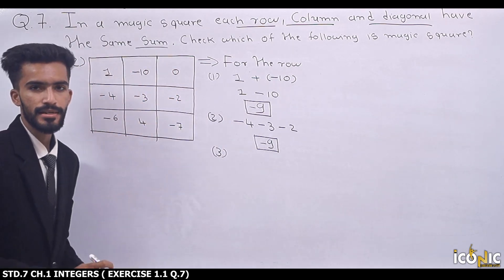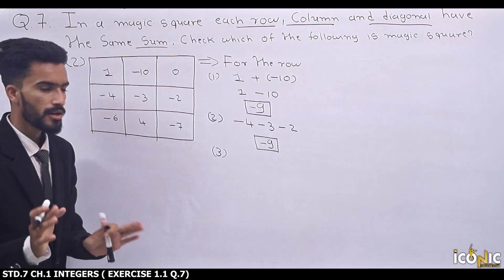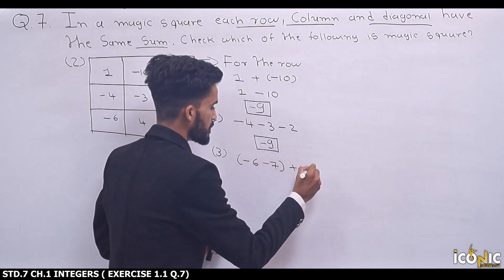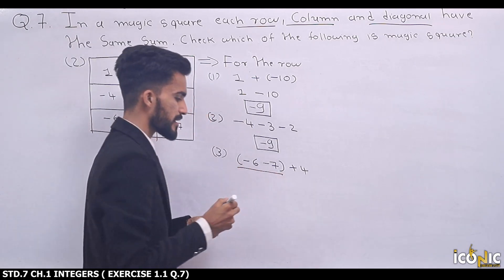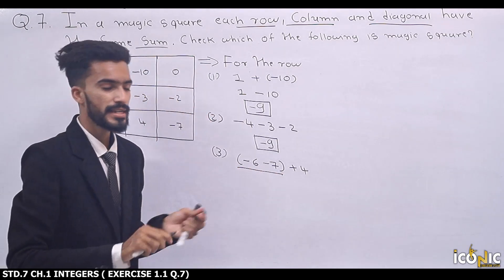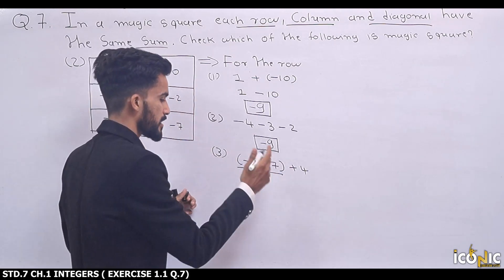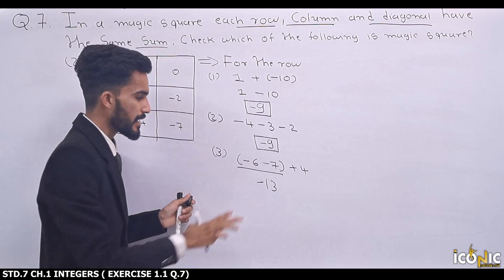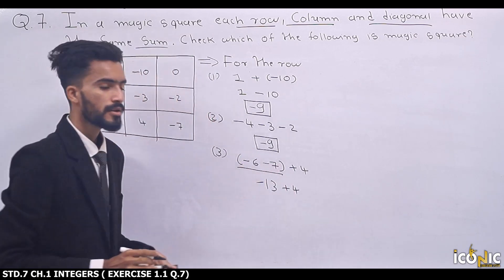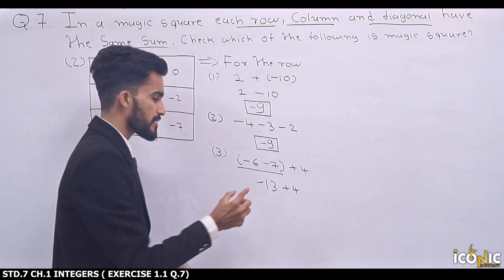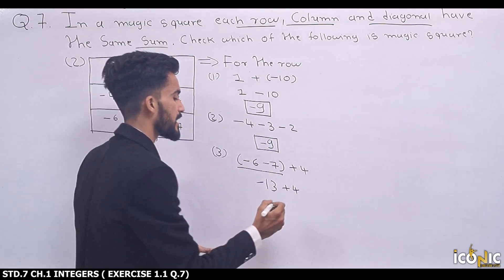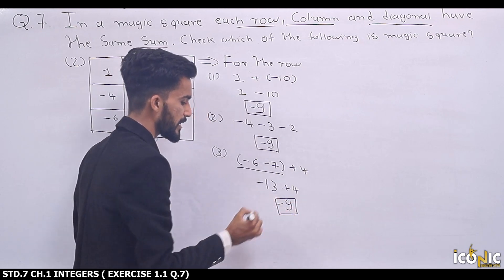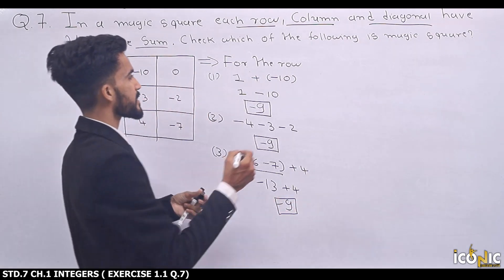Third row: -6, 4, and -7. Put minus values together: -6 minus 7, same sign addition gives -13. Then -13 plus 4: different sign, subtraction — 13 minus 4 is 9, sign of bigger number is minus, so answer is minus 9. All three rows give the same answer: minus 9.